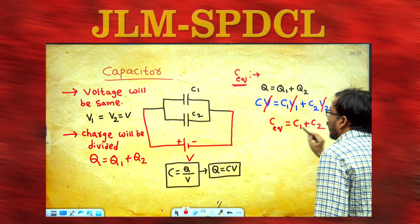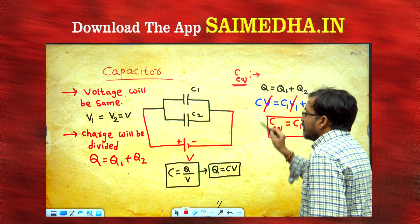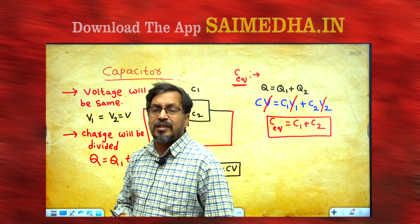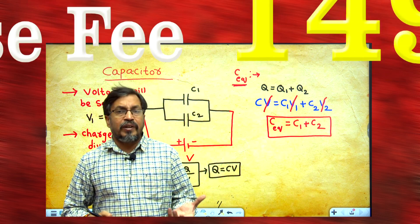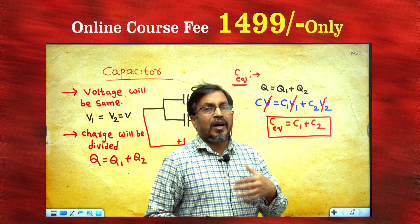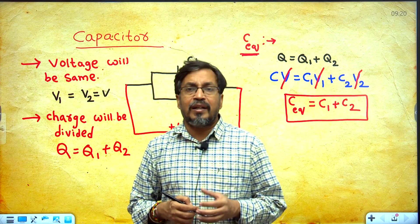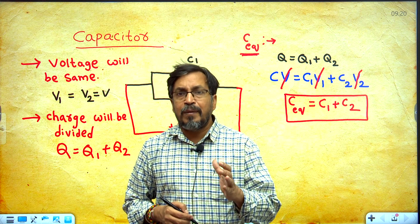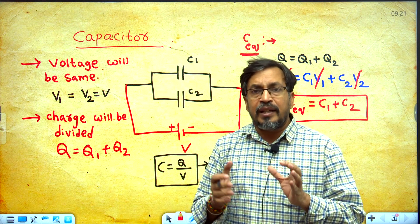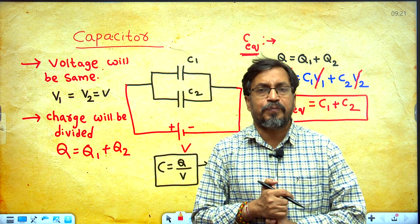So when two capacitors are connected in parallel, C equivalent equal to C1 plus C2. From the last video, for two capacitors in series: 1 by C equivalent equal to 1 by C1 plus 1 by C2, and C equivalent equal to C1 C2 by C1 plus C2.